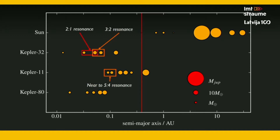If we look at which ones actually are in resonances, there are three in Kepler-32 that appear to be very close to a mean motion resonance, and two in Kepler-11 that appear to be very close to a mean motion resonance. But in general, most of these planets are not in mean motion resonances. So the question is: if they did form via this convergent migration scenario, then why do we have a bunch of these things that aren't in mean motion resonances? This pattern is repeated throughout the entire Kepler data.